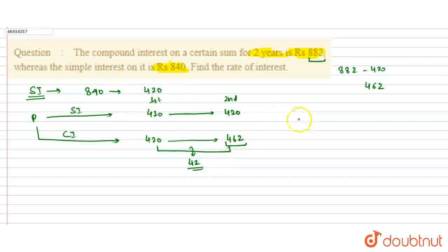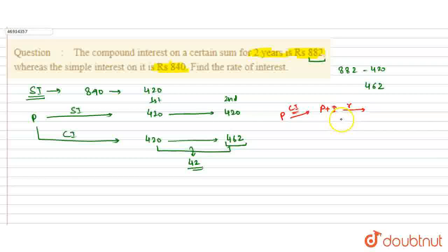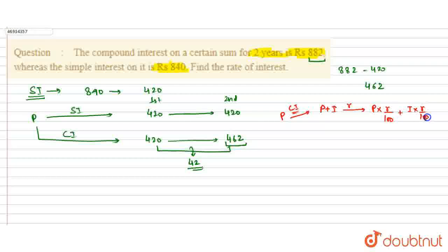अगर मेरे पास एक amount P था। P को मैंने compound interest में लगाया। पहले साल के बाद P plus कुछ interest I बन गया। तो P plus I पर वापस rate of interest लगेगा। इसको दो part में लिख सकते हैं: P into R by 100, plus I into R by 100। तो P into R by 100 मेरा simple interest ही है।